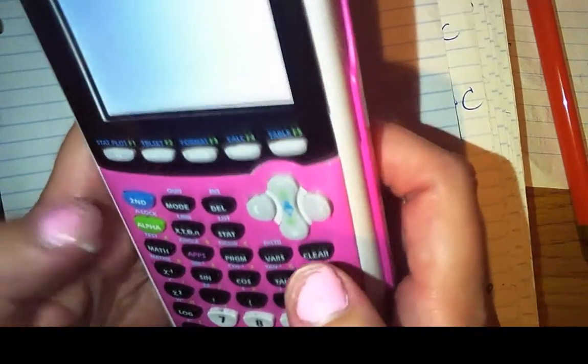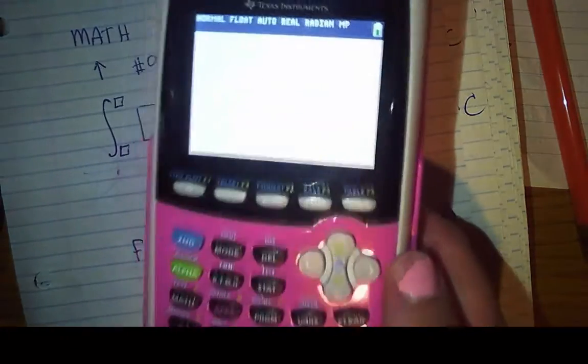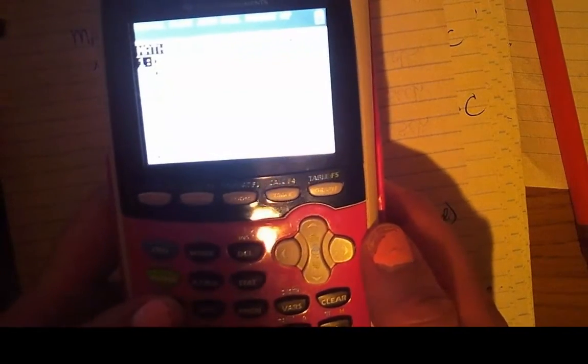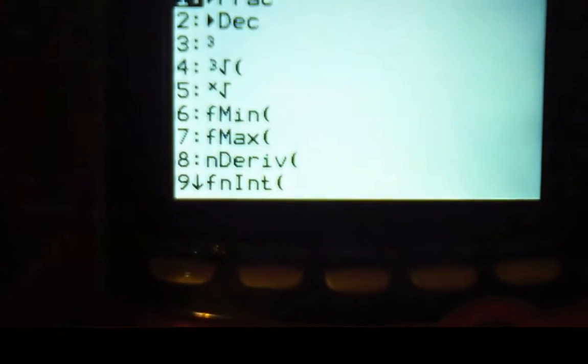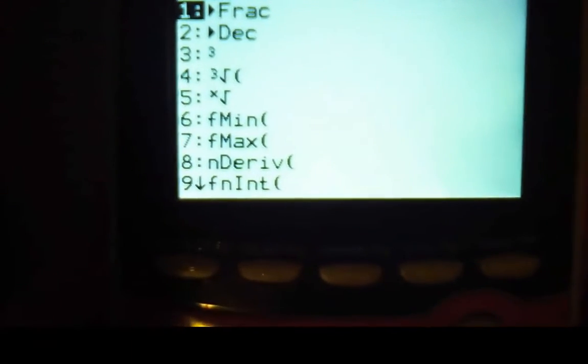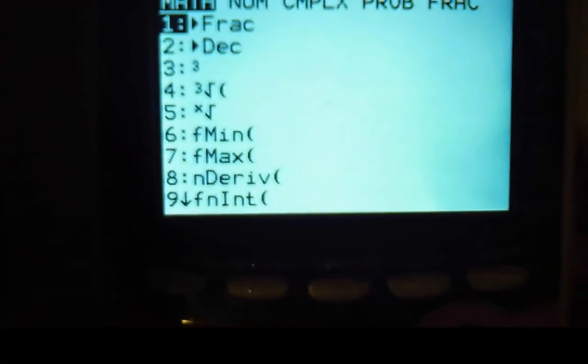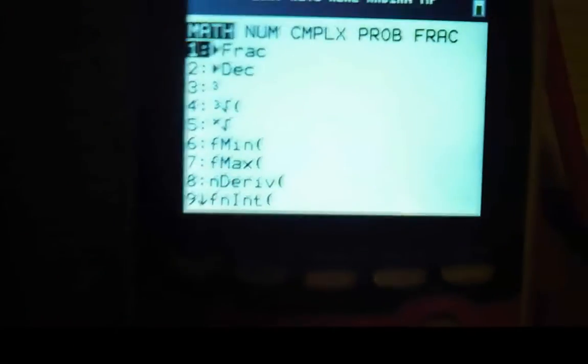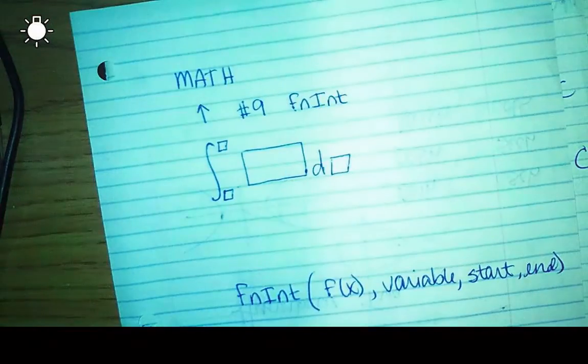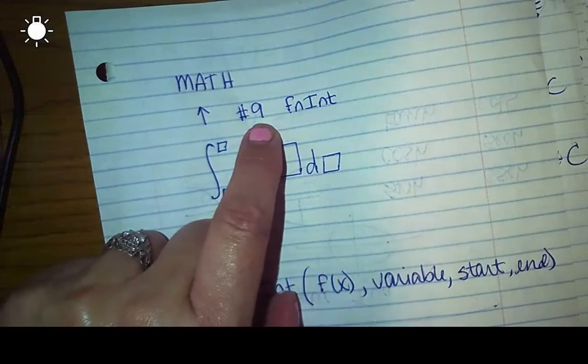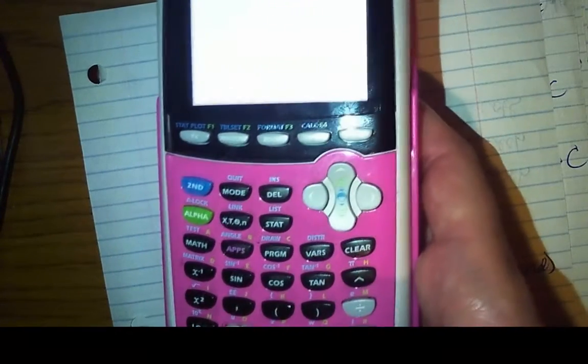So I need you to go and hit math. If we hit math, if you'll notice, option number nine should say F-N-I-N-T, and that means the function of integration. So you can either scroll up to number nine or you can hit nine, whichever. So I'm going to choose to hit nine.